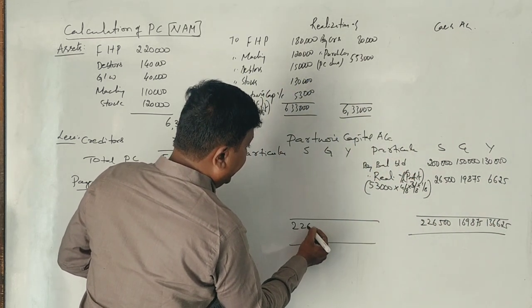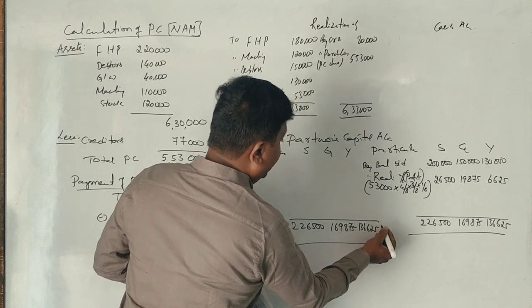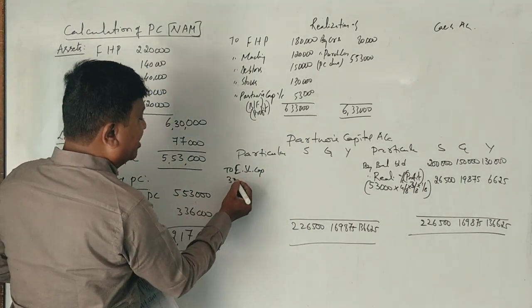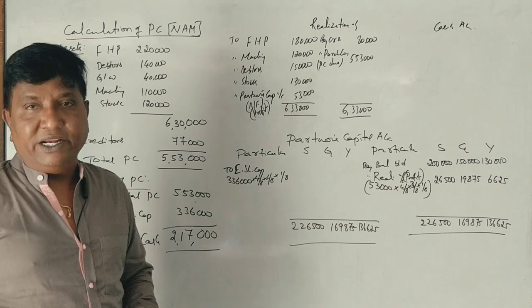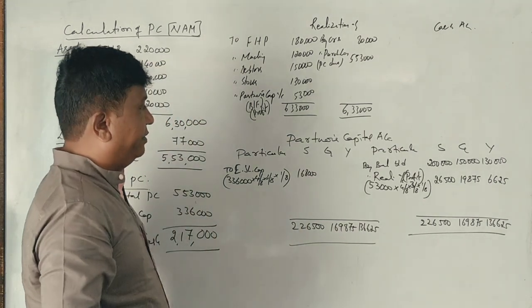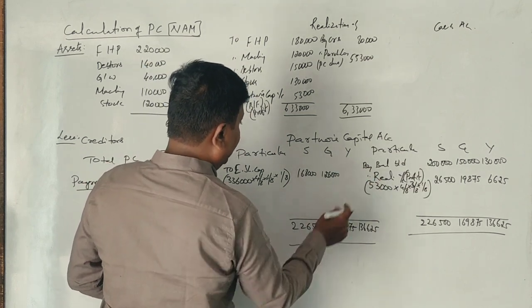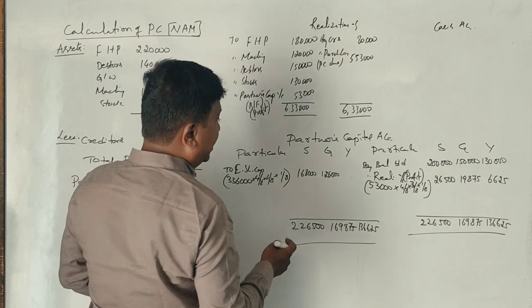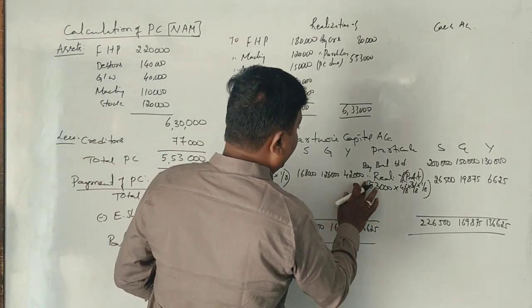After that, we have share capital. The share capital is distributed in the same ratio - 4:3:1. Share capital of 3,36,000 divided accordingly: 1,68,000, 1,26,000, and 42,000. This is the share capital allocation.